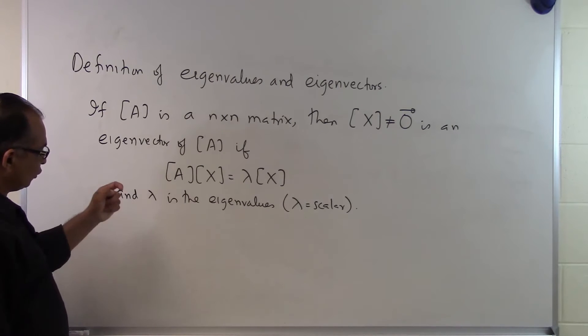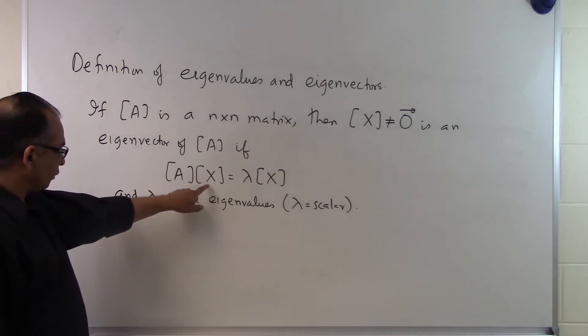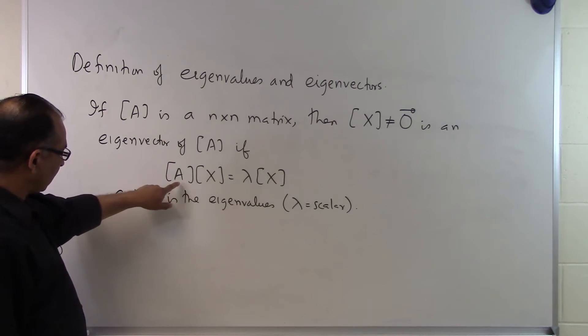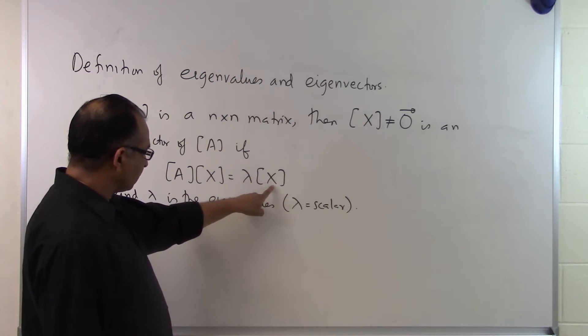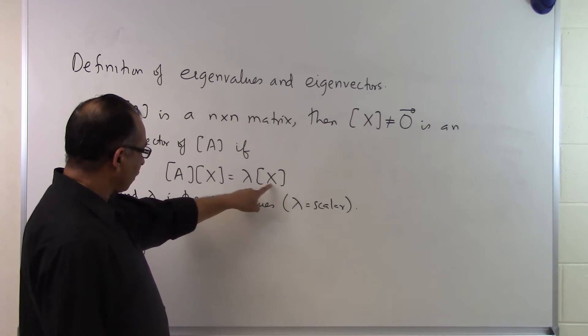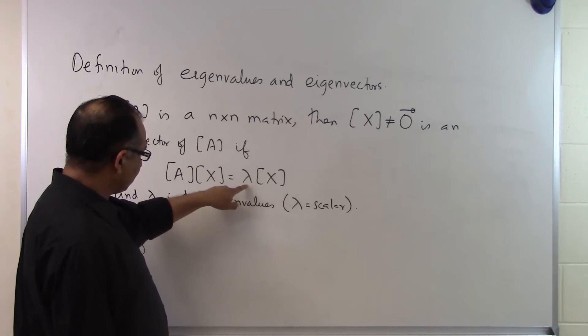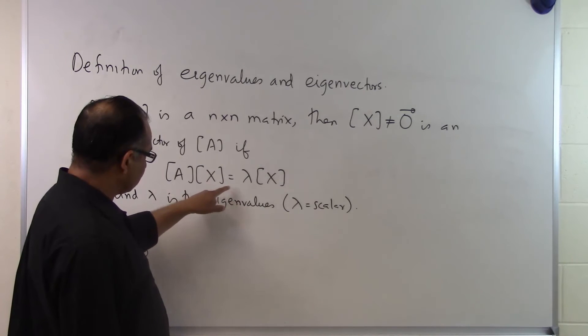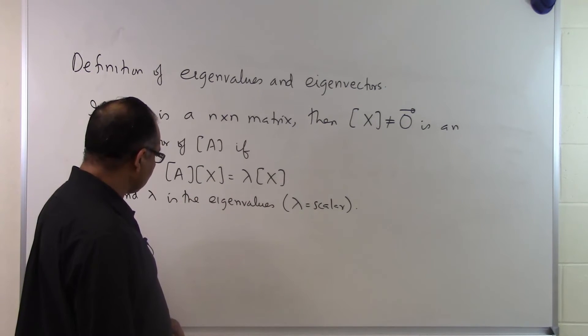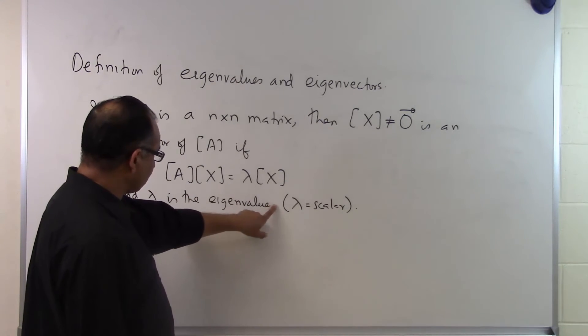So all you have to do is find a column vector which is non-zero such that when you multiply it to the A matrix that it turns out to be some number times the eigenvector itself, or this column vector x itself. And whatever that scalar is by which you are multiplying it so that this equality is held is called an eigenvalue. So lambda is the eigenvalue.